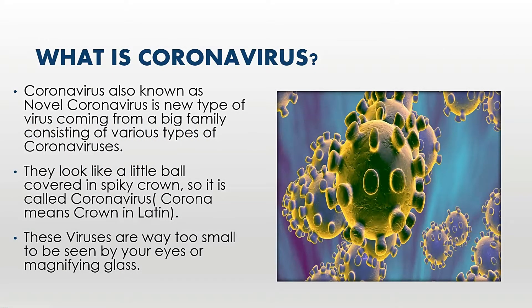First, I will be telling you what is the coronavirus. Coronavirus, also known as novel coronavirus, is a new type of virus coming from a big family consisting of various types of coronaviruses. They look like a little ball covered in a spiky crown, so it is called coronavirus — corona means crown in Latin. These viruses are way too small to be seen by your eyes or a magnifying glass.